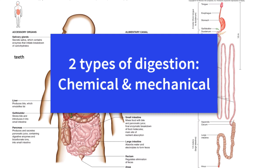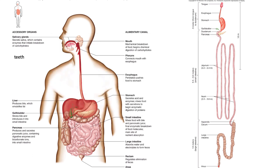Chemical digestion is when we use enzymes to break bonds that are holding macromolecules together. In the mouth, salivary glands have salivary amylase, which is an enzyme — you know it's an enzyme because it ends in '-ase.' That is going to start the digestion of sugars and carbohydrates. Whereas the teeth, the accessory organs, are going to help with mechanical digestion where we're breaking down the food into smaller and smaller portions.